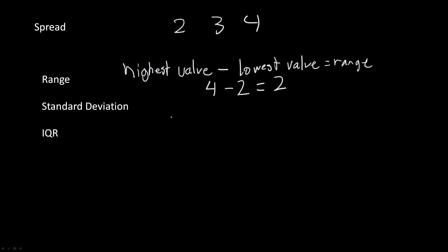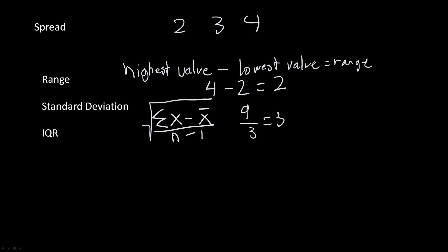The next way is the standard deviation. You can use your calculator to find it, but the formula is the square root of the summation of (x minus x-bar) squared, over the sample size minus 1. For example, with the data set 2, 3, 4, the mean x-bar is 3. You plug in each value, subtract the mean of 3, divide by the sample size of 3 minus 1, and take the square root. You can calculate it yourself or using the calculator.